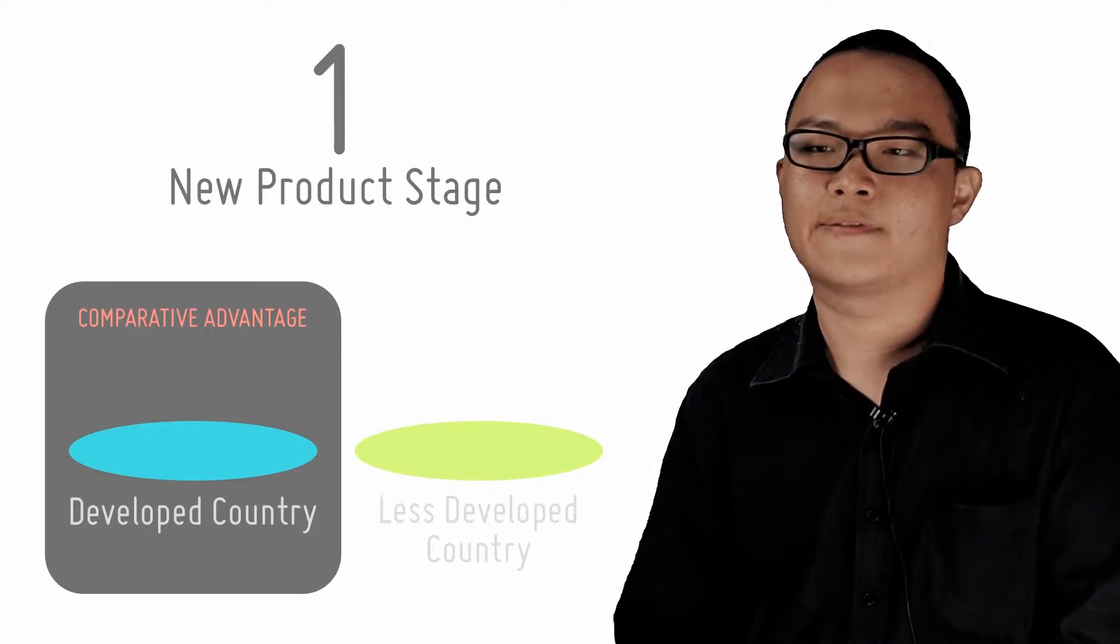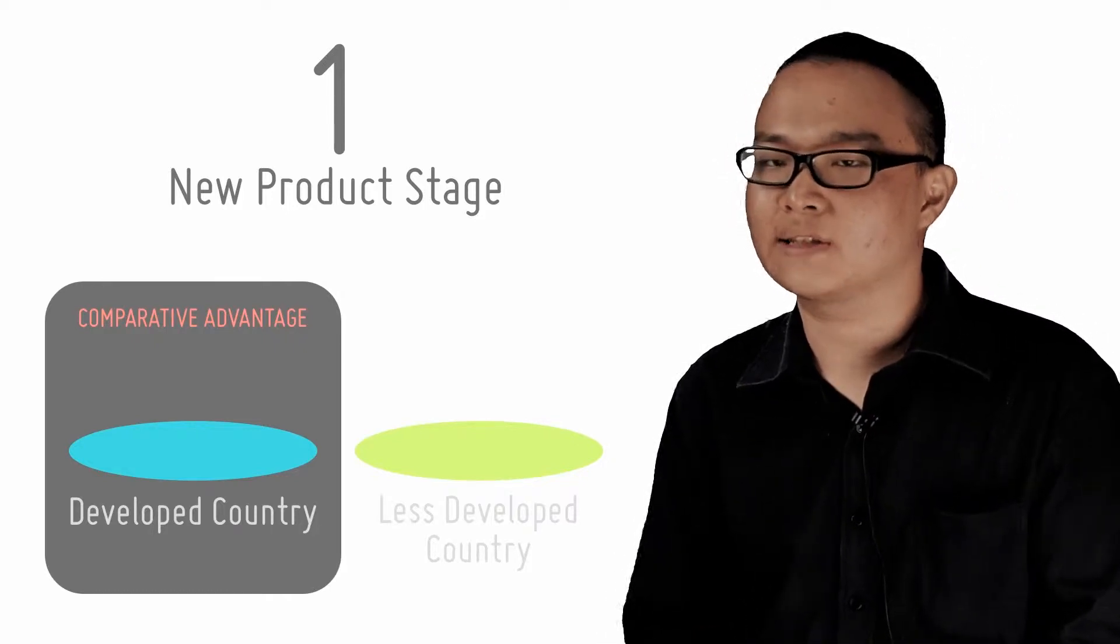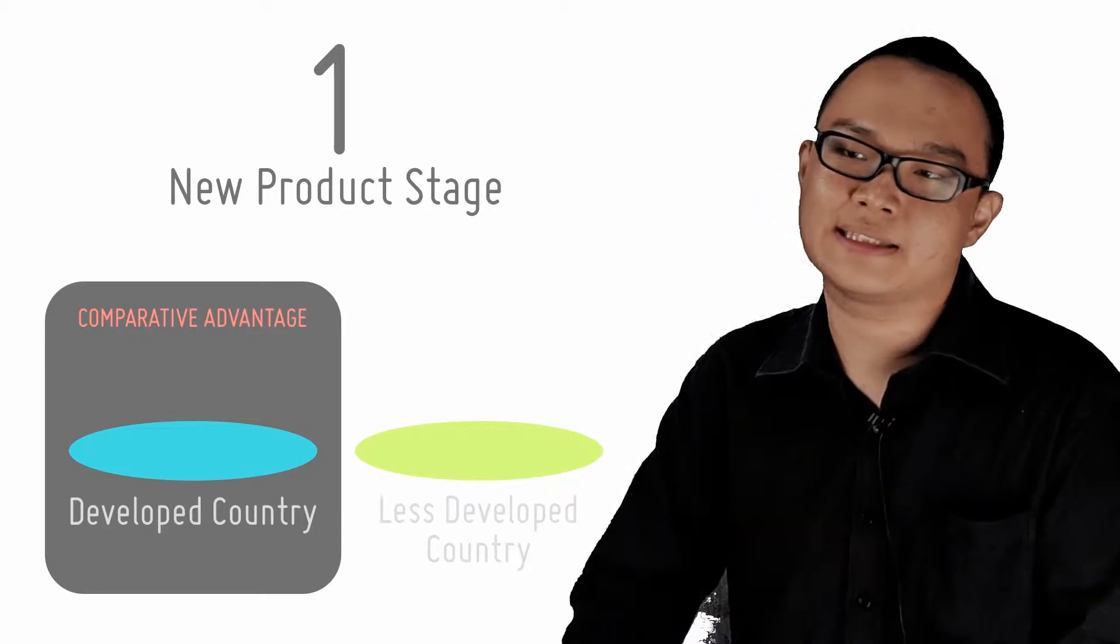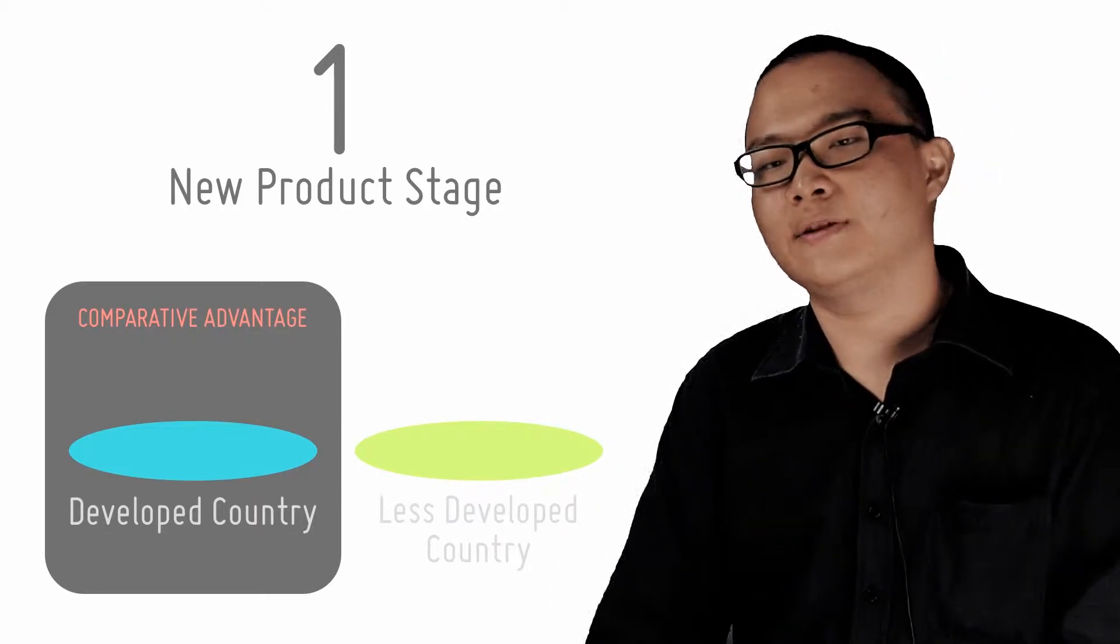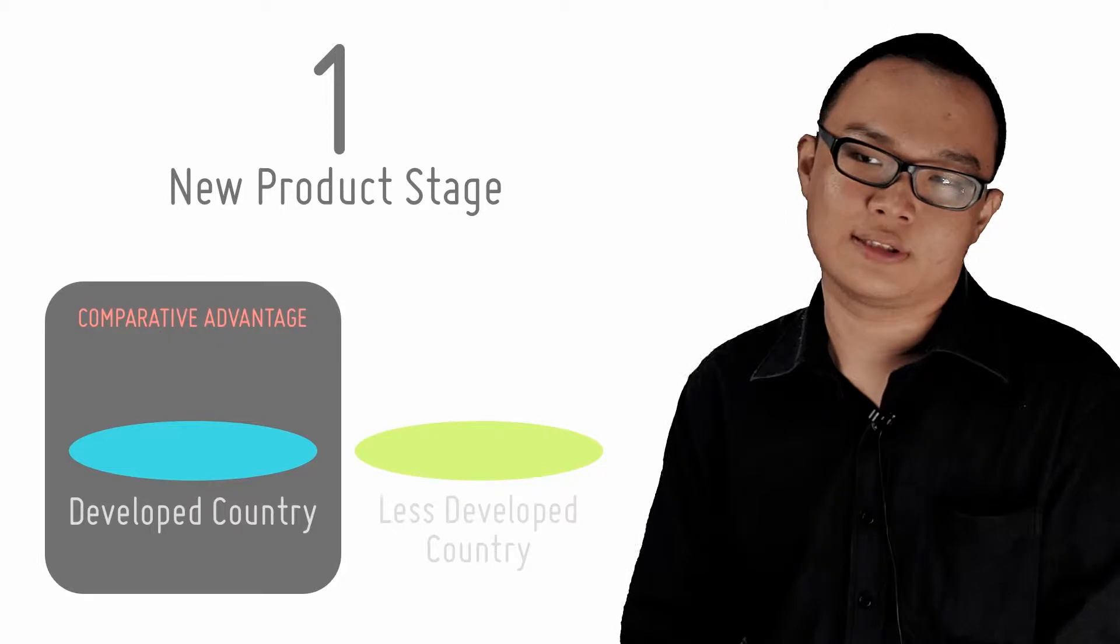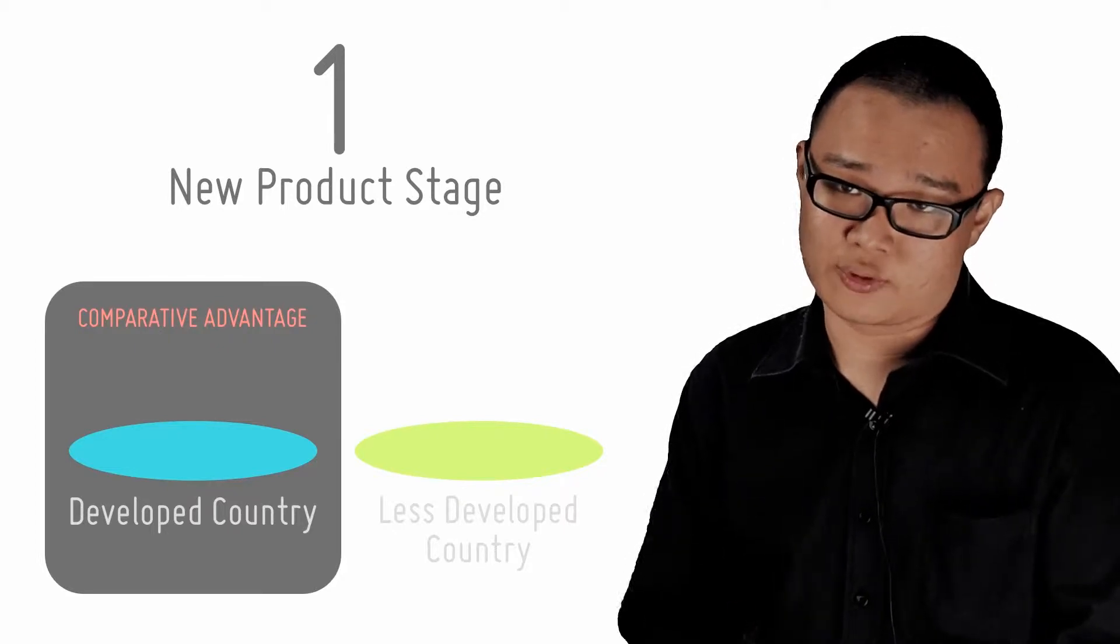Bhagwati's theory of kaleidoscopic comparative advantage is important and depends on the fact that many consumer products have limited life cycles. He says that differentiated products like consumer electronics undergo a three-stage process of growth.